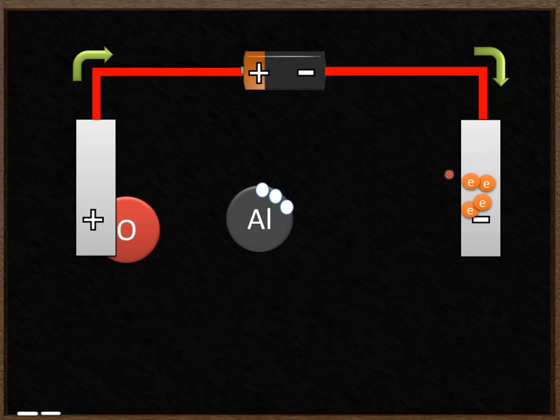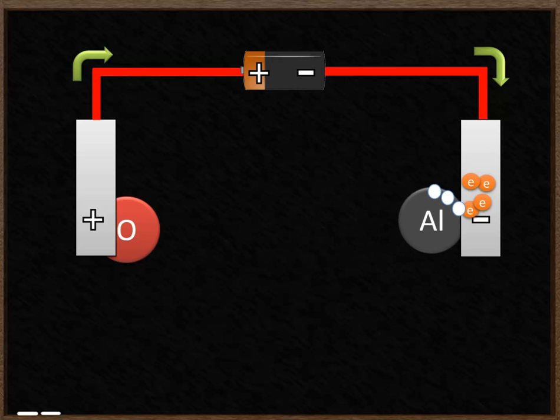Because this side is negatively charged and aluminium is positively charged, aluminium is going to be attracted to this side. When it gets there, its three spaces for electrons will be filled with three of those electrons. Aluminium is now just a normal atom of aluminium. It's no longer an ion. It can join together with other particles of aluminium and can be extracted.